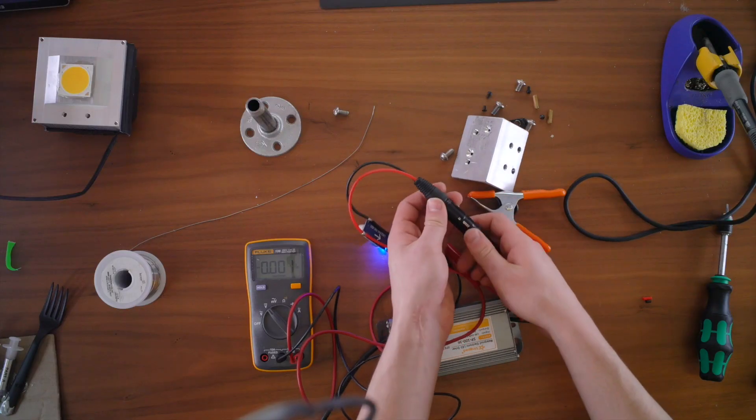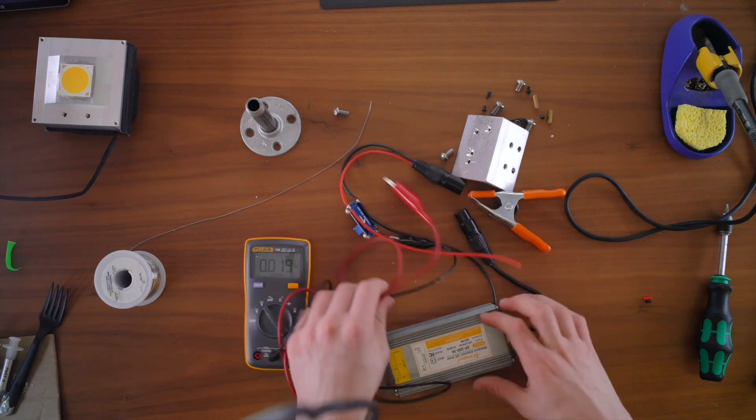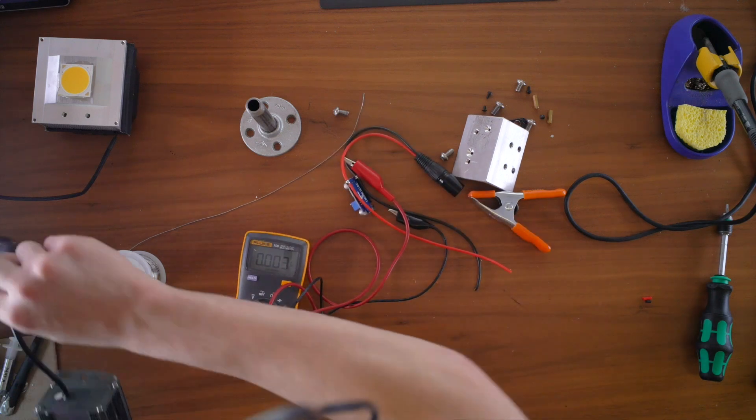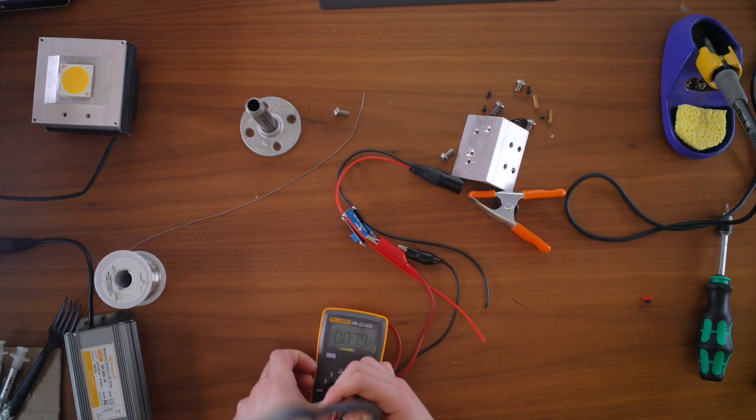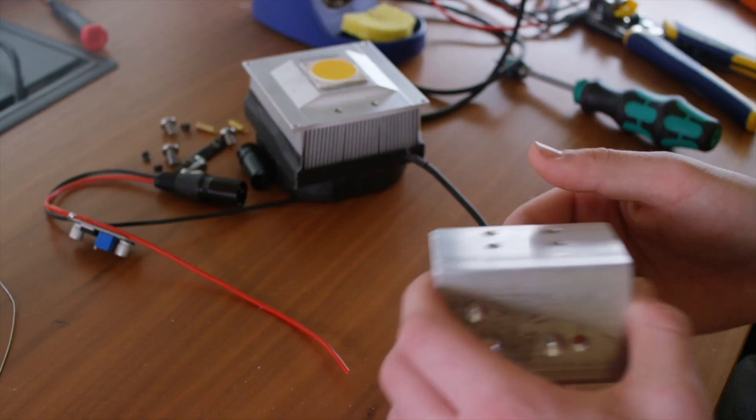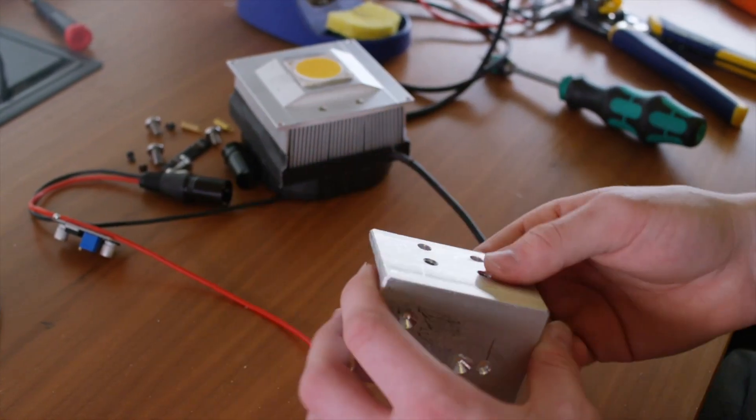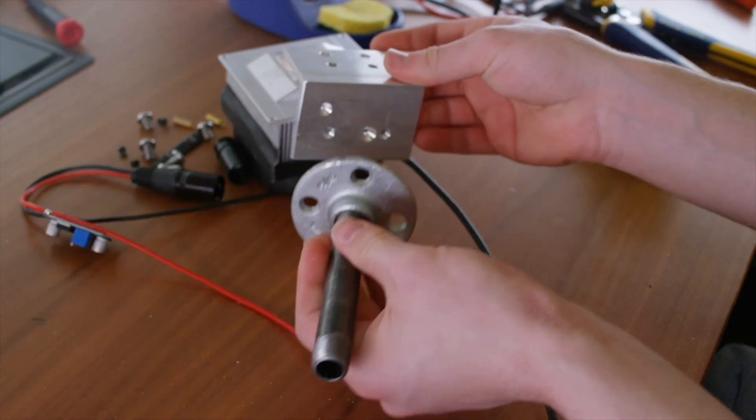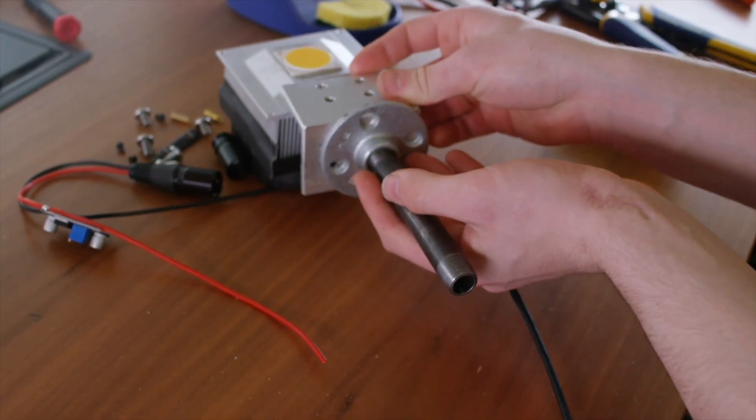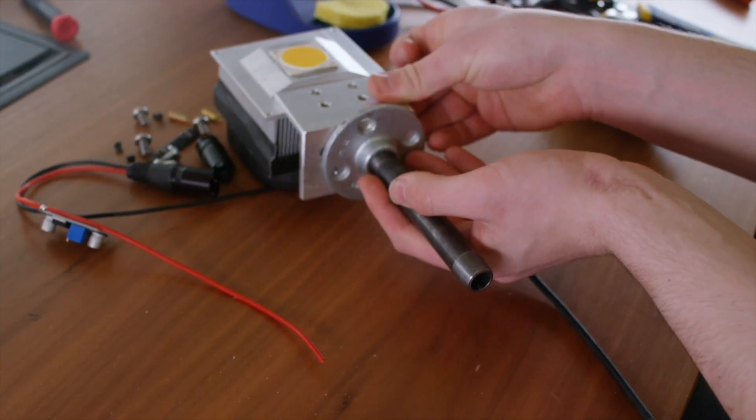Now we can go ahead and unplug this from the power supply, put the power supply off to the side for a second, get the multimeter out of here. Now we're going to go ahead, put this all on the side for a second, and work on mounting the flange to this bracket, and then getting the bracket prepared to be mounted under here.